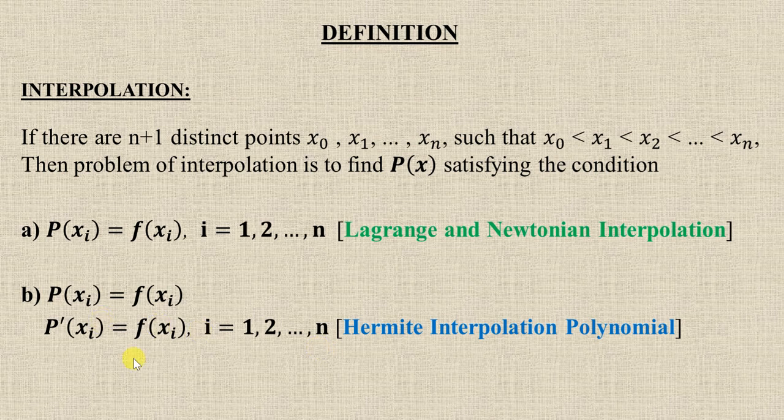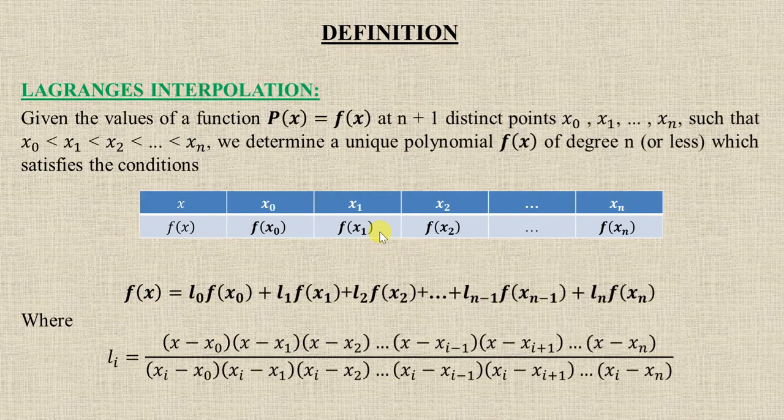This condition is for Lagrange and Newtonian interpolation, and this is for Hermite interpolation. Today we will discuss about Lagrange only. In Lagrange, n plus one distinct points satisfy this condition. At different x we have different f(x).